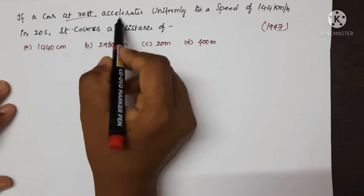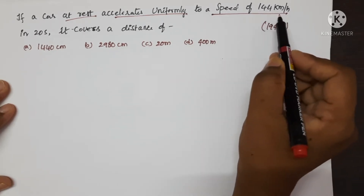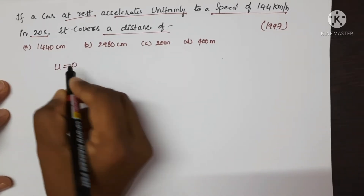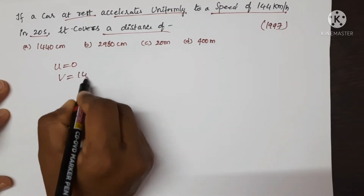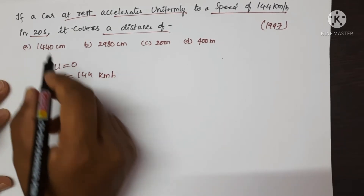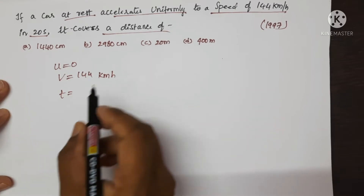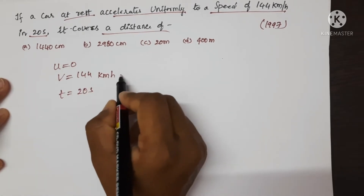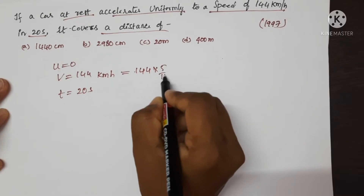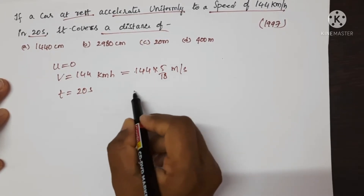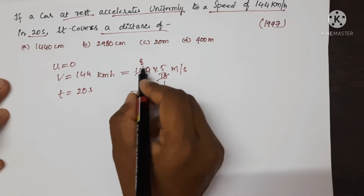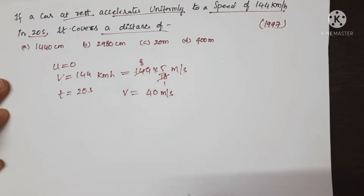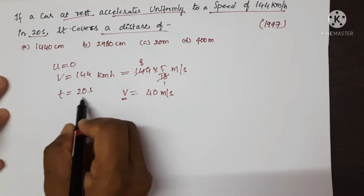If a car at rest accelerates uniformly to a speed of 144 km per hour in 20 seconds, it covers a distance of — we need to find out. Initial velocity U = 0, final velocity V = 144 km/h, and time = 20 seconds. Since time is in seconds, we must convert 144 km/h to m/s by multiplying by 5/18, giving V = 40 m/s.